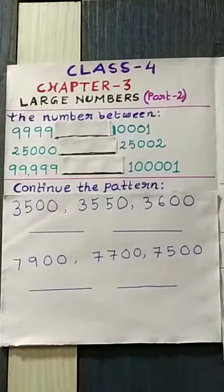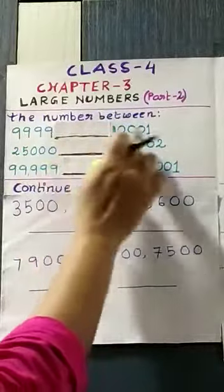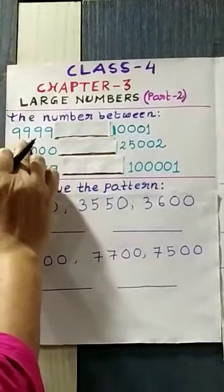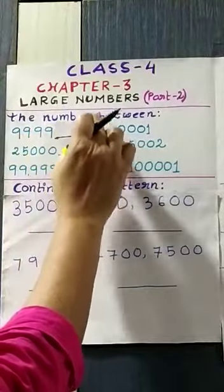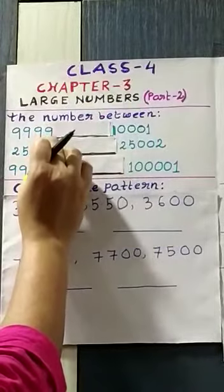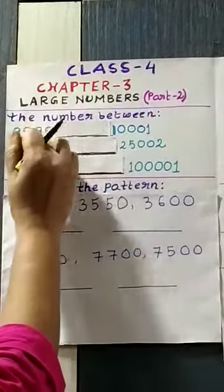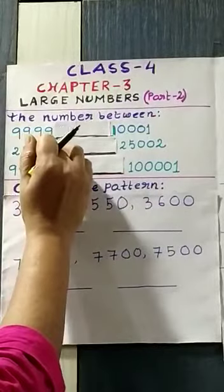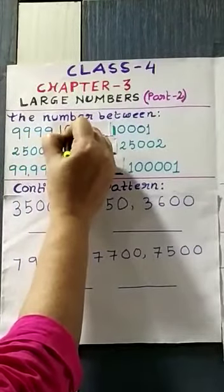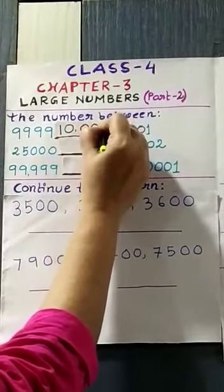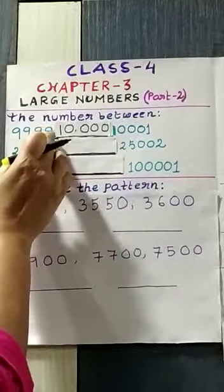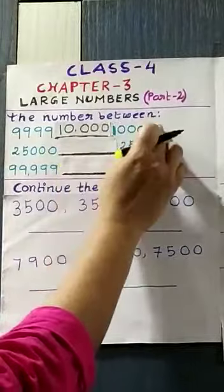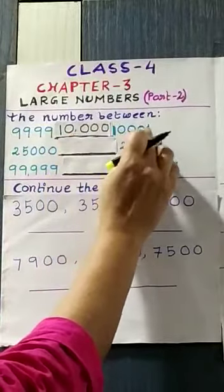We will start with the number between. Here you can see two numbers are given everywhere. The first one is 9999. We will have to find out the next number — we add 1 to get the after number. So if we add 1 with 9999, the number becomes 10,000. That is the smallest number of 5 digits, and 9999 is the largest number of 4 digits. The next number after 10,000 is 10,001.